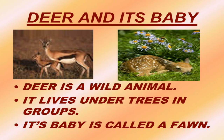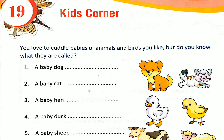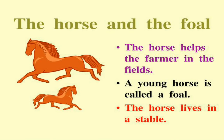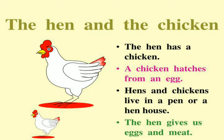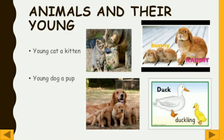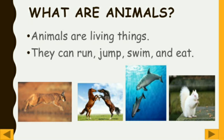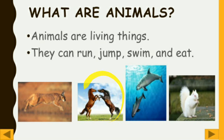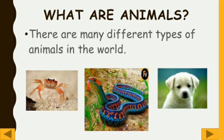Now let's revise all the names. Animals are living things — they can run, jump, swim, and eat. For example, a lion can run, a horse can jump, a fish can swim, and a squirrel can eat. There are many different types of animals in the world.